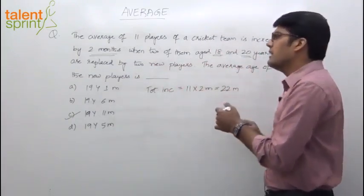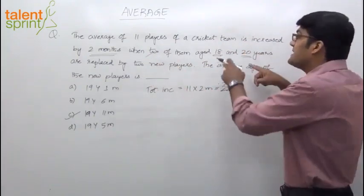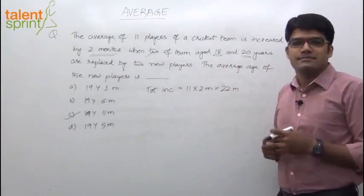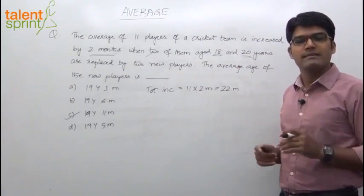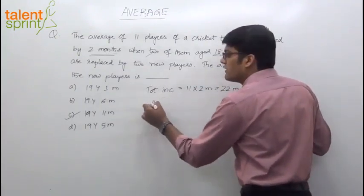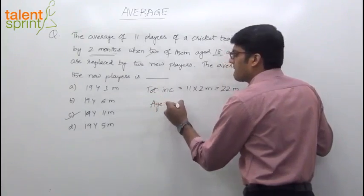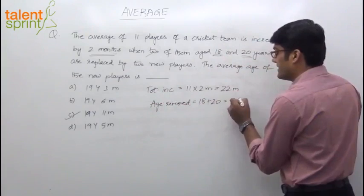One easy way to crack this is, let us assume instead of 2 players, let's say there is only 1 player who has gone out, whose age is 18 plus 20, 38 years. Instead of saying 2 different players have gone out, we can say only 1 player has gone out to make it simpler. Anyway, the total age removed is how much? 18 plus 20, which is 38 years.